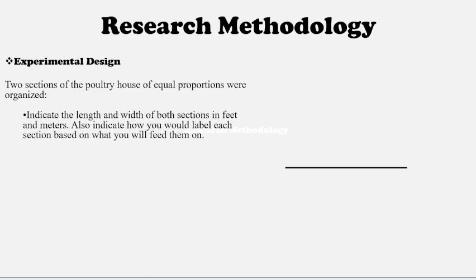The second step in your SBA is the research methodology. Under research methodology you have your experimental design — you must indicate what design you'll use to carry out your research. For example: two sections of the poultry house of equal proportion were organized. Indicate the length and width of both sections in feet and meters — for example, Section A is 50 by 10 feet, and Section B is also 50 by 10 feet.